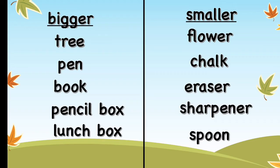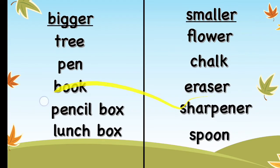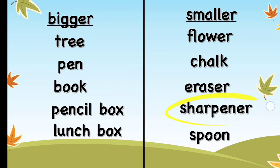We keep a sharpener inside our pencil box. Why? Because a sharpener is smaller than a pencil box, so a pencil box is bigger than a sharpener.